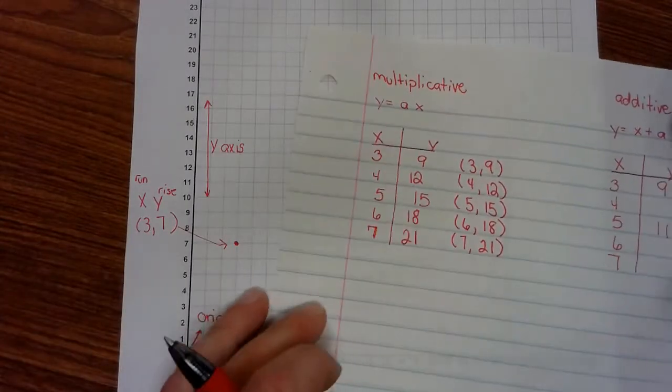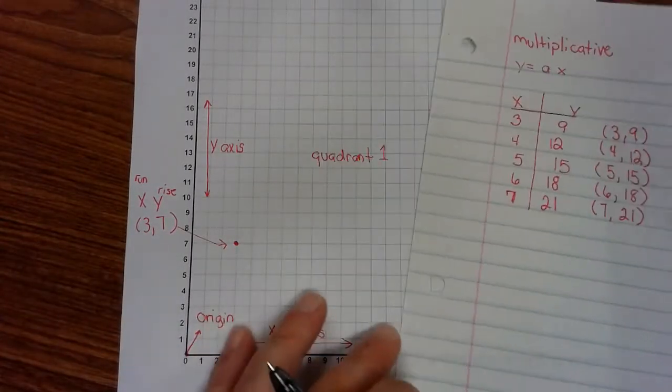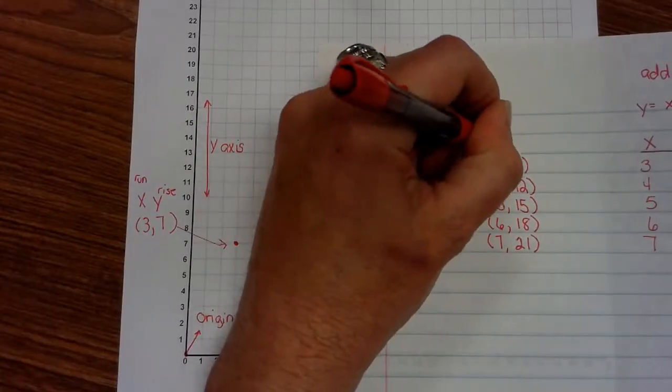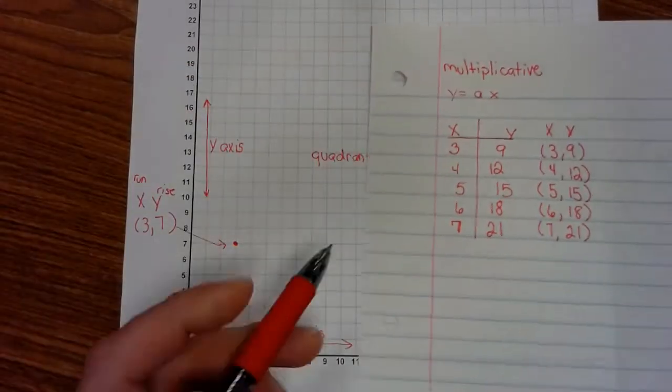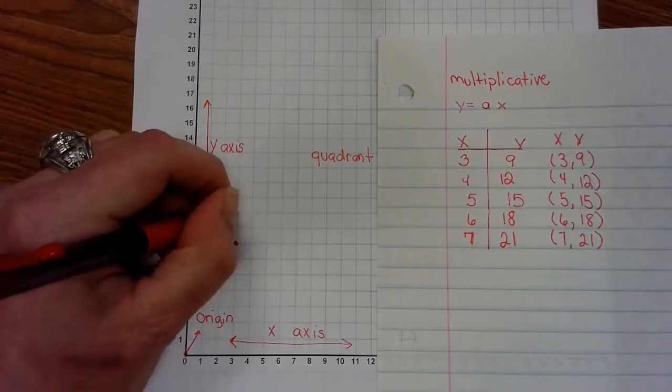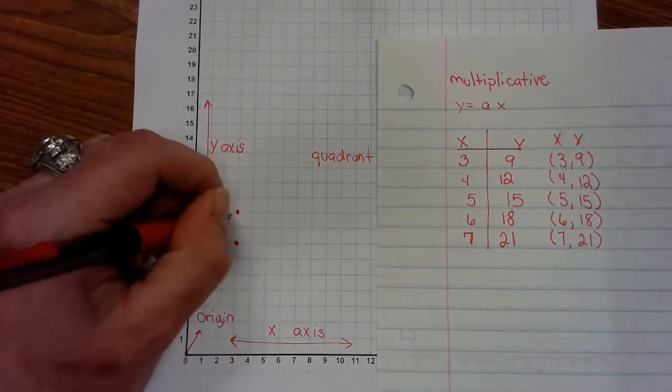Now I can come to my graph, my coordinate grid, and I can plot these. I know that this is my x and this is my y side. X always comes first. So I go 3, up 9. Plot that. That was point 1.